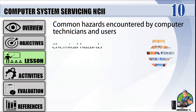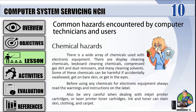Chemical hazards: there is a wide array of chemicals used with electronic equipment, including display cleaning chemicals, keyboard cleaning chemicals, compressed gas dirt and dust removers, and many cleaning solvents. Some of these chemicals can be harmful if accidentally swallowed, get on bare skin, or get in the eyes. Before using any chemicals for electronic equipment, always read the warnings and instructions on the label. Also be very careful when dealing with inkjet printer cartridges.